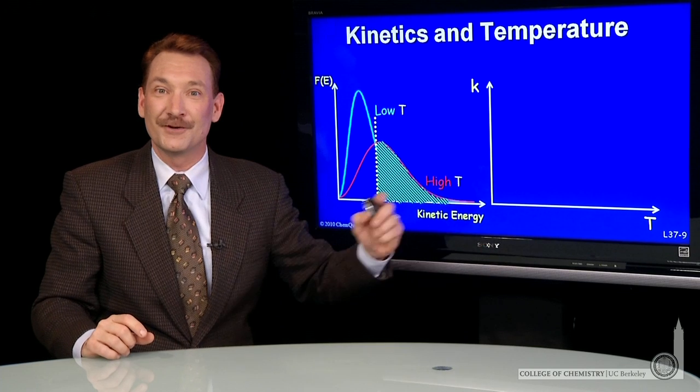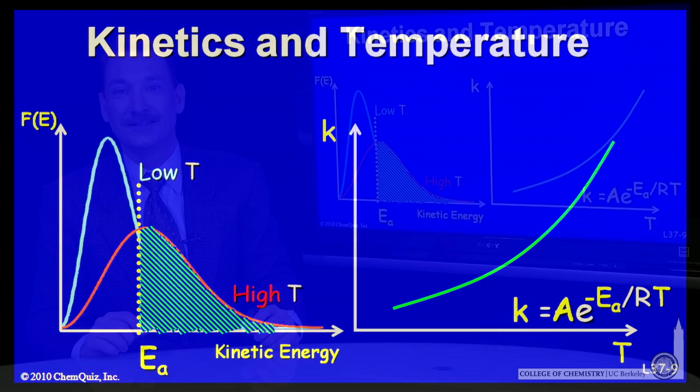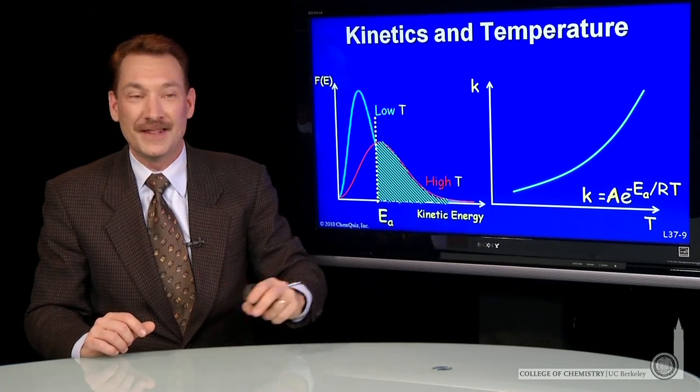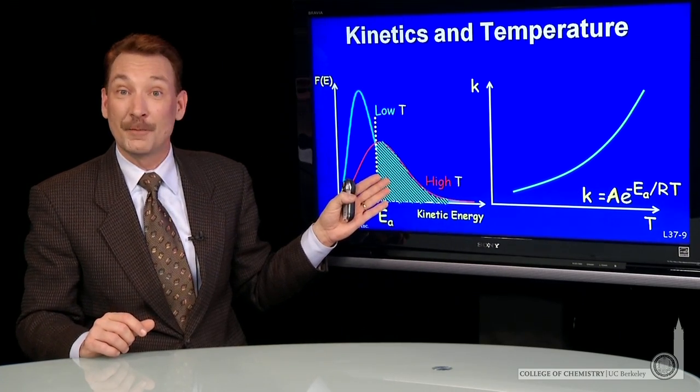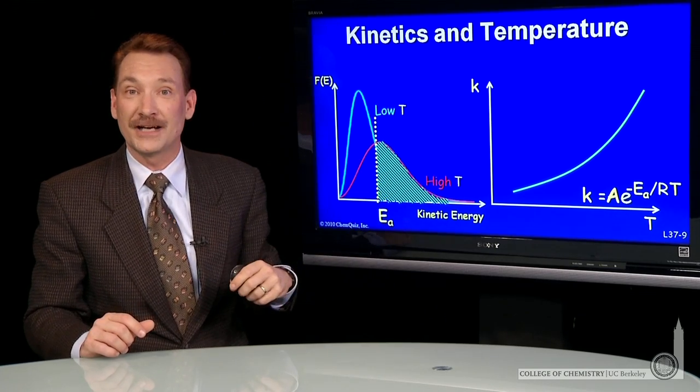So if you plot the rate constant versus temperature, what you find is they have a functional form that increases with temperature. And that functional form is given by this: the rate constant is a constant times the exponential of the activation energy minus over RT. So rate constants are a function of temperature, and that reflects the number of particles that have activation energies or energies above the activation energy.